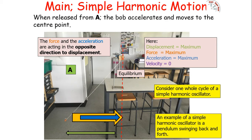At that particular instant, because we have the maximum value there, the velocity is zero — the pendulum has stopped instantaneously and is about to swing back towards equilibrium. Remember, the force and acceleration, whilst both at their maximum, are acting in the opposite direction to the displacement due to the condition of simple harmonic motion.